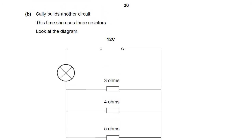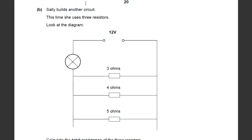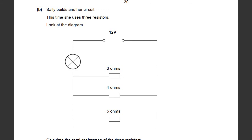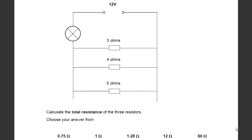This last one is probably one of the trickiest calculations, and you don't get given this equation on the equation sheet. Sally builds another circuit. What type of circuit is this? Hopefully you recognise that straightaway — she's now building a parallel circuit. This time she uses three resistors. Calculate the total resistance of the three resistors and choose your answer from the values below. Pause the video and have a go; if you can't remember it, look at your revision guide or class notes to find the equation for working out resistances in parallel.